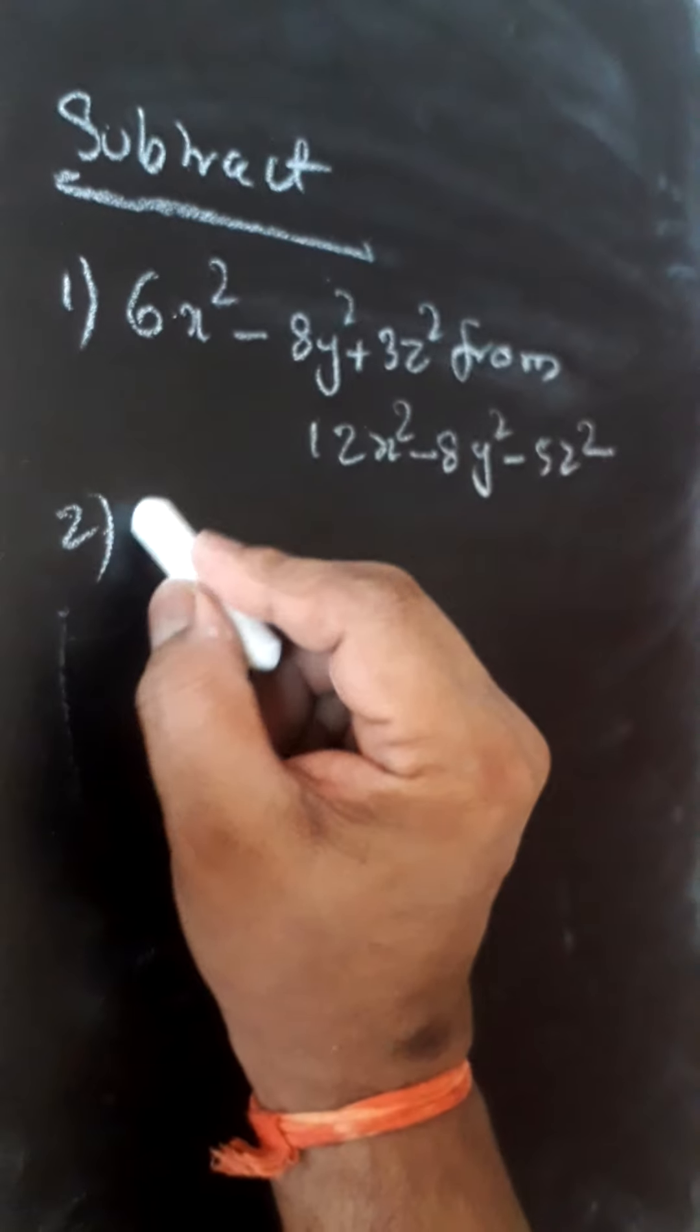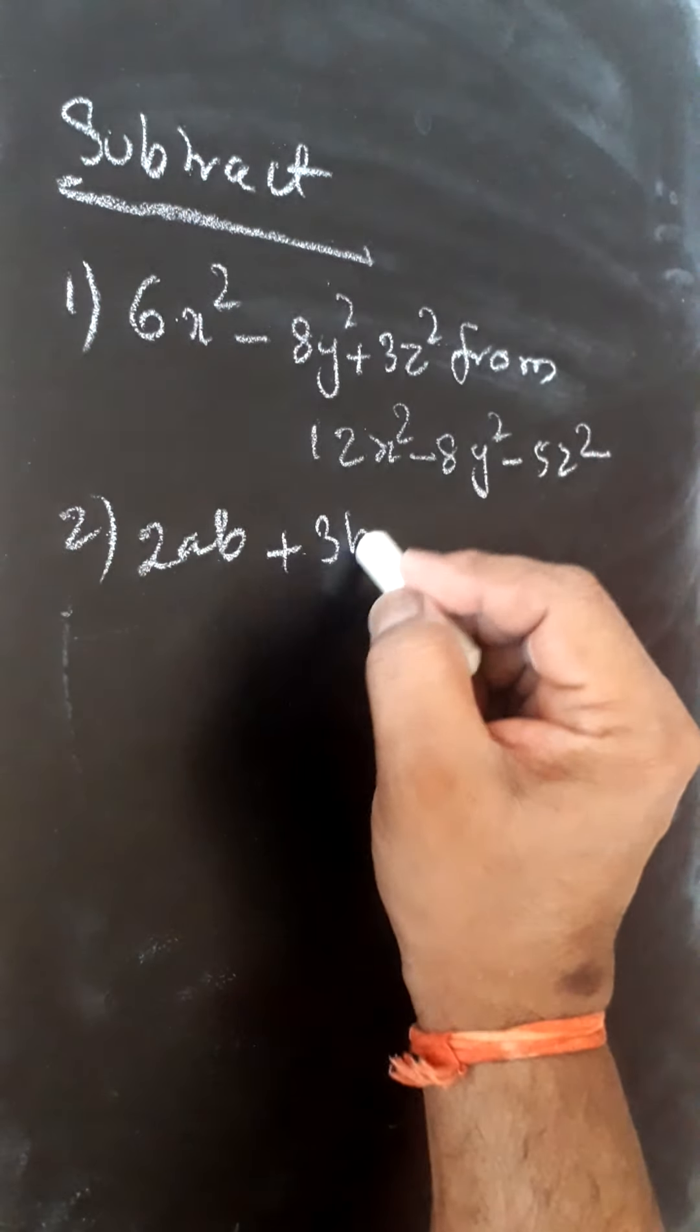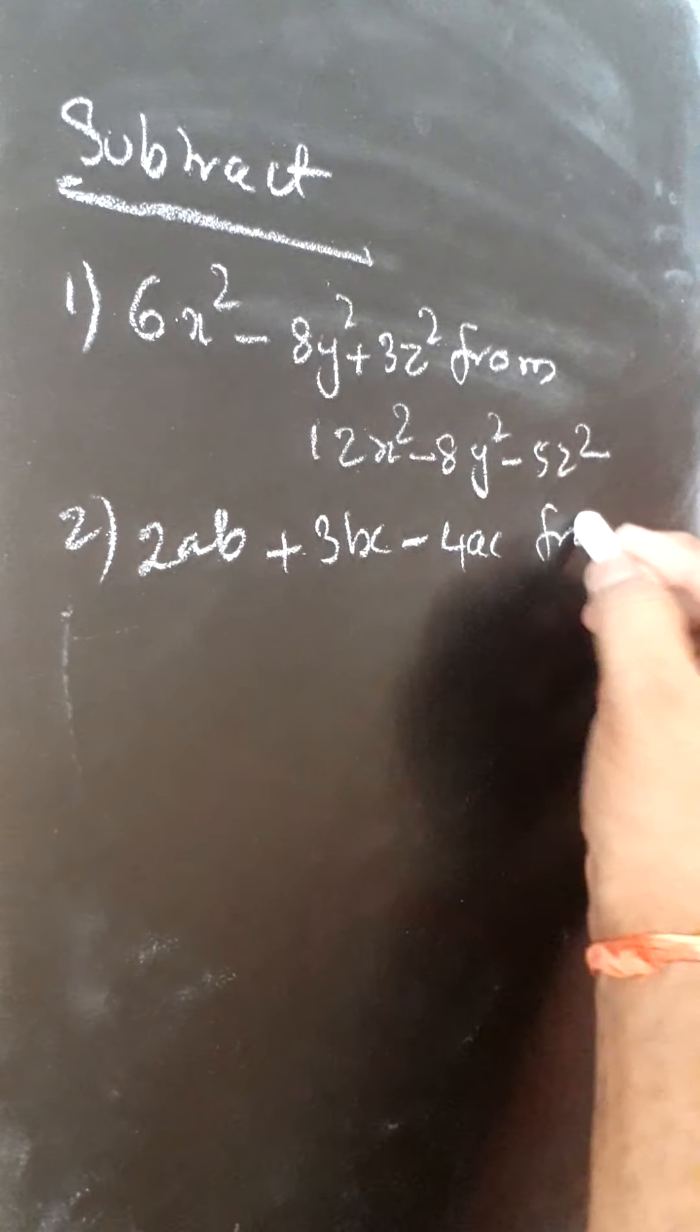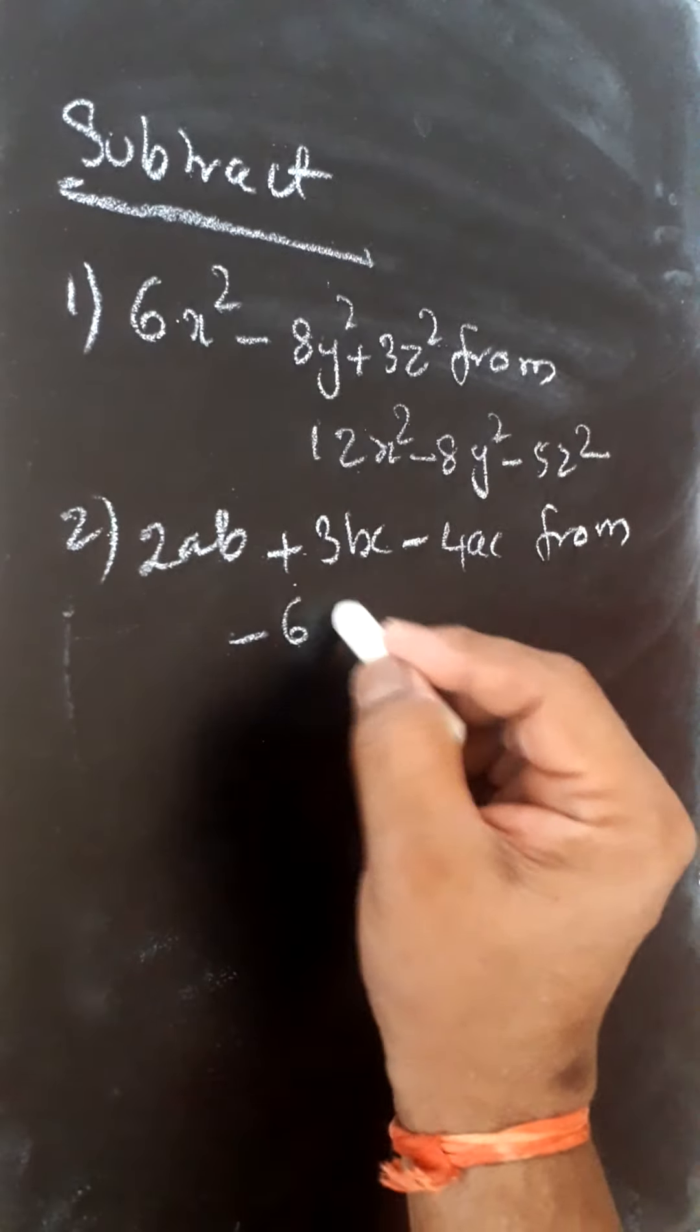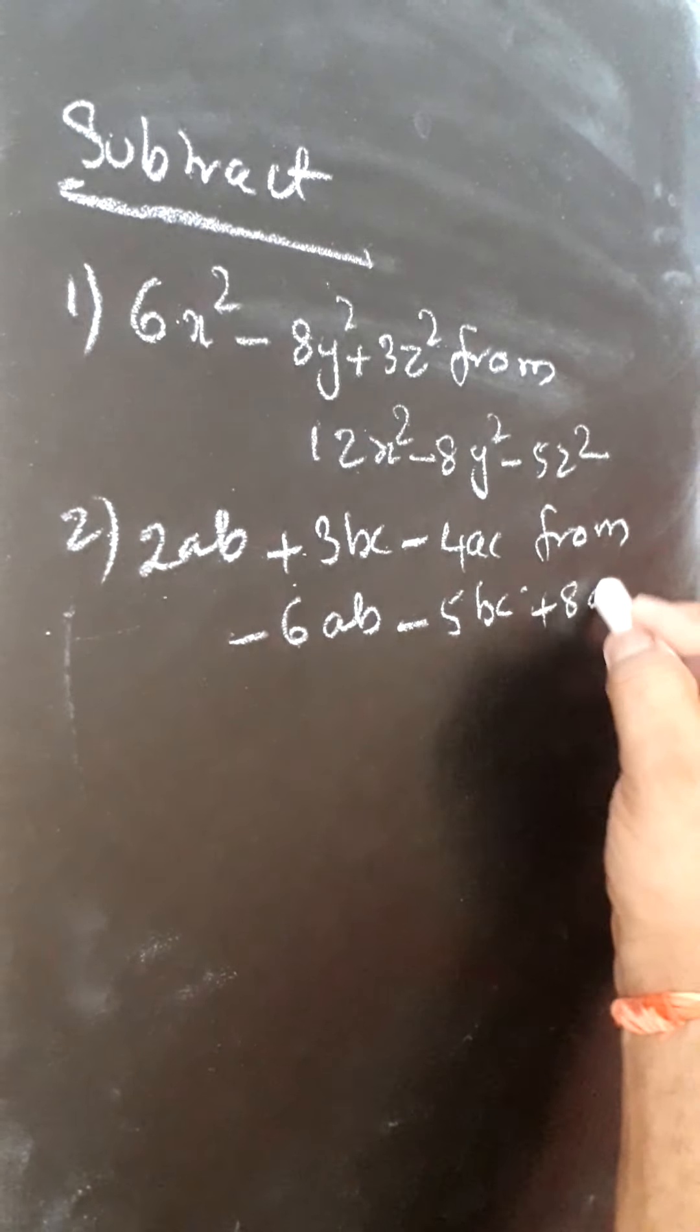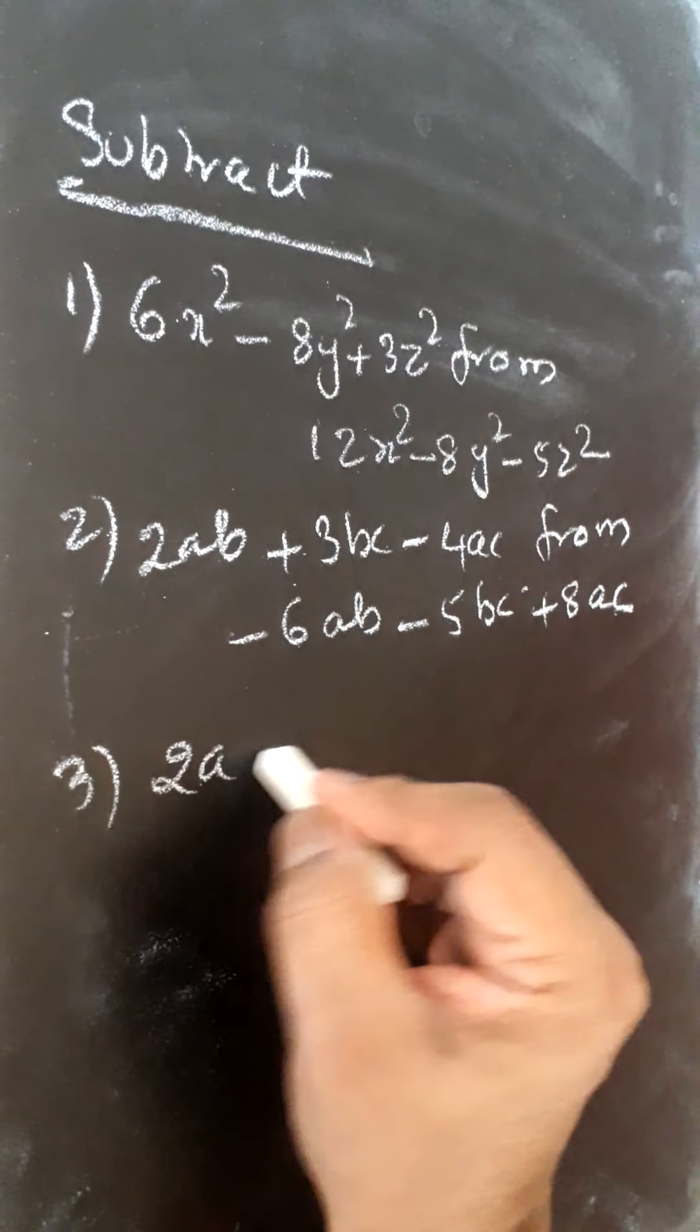Second: 2ab + 3bc - 4ac from -6ab - 5bc + 8ac.